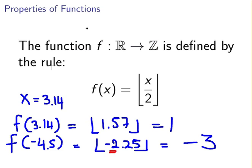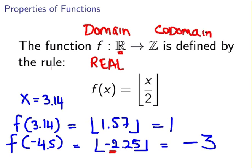Let's talk about the domain and the co-domain. This is the domain up here, the R value, that means real numbers, and the co-domain which is the Z there, that means the integers.